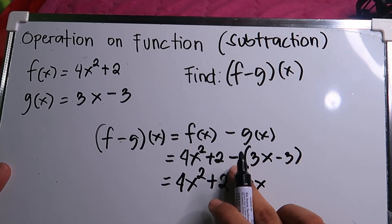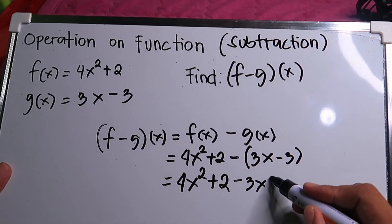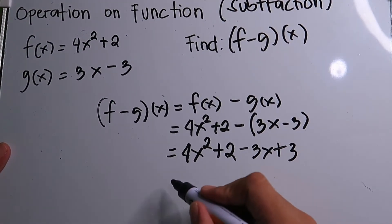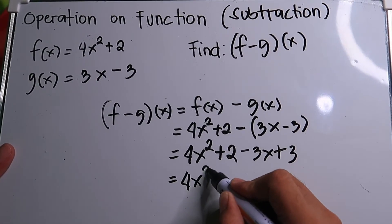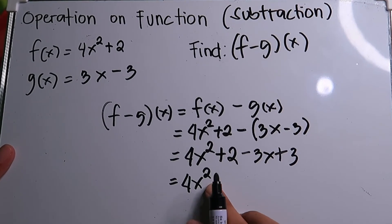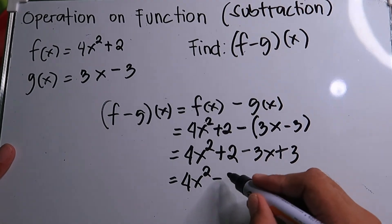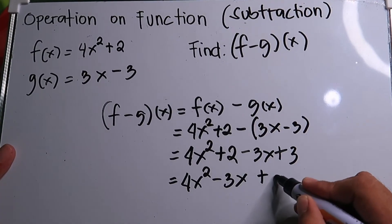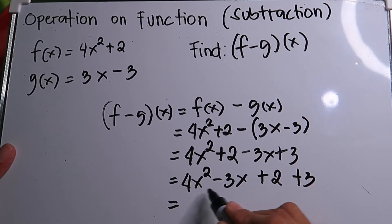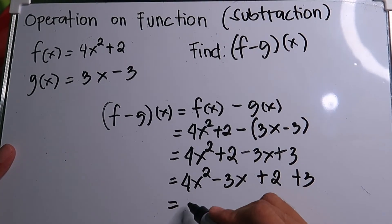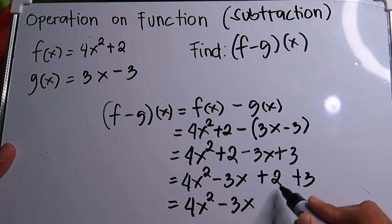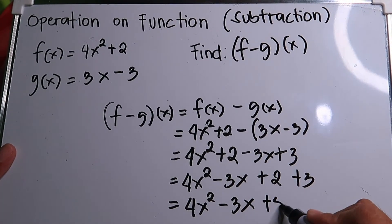Remove the parentheses by distributing the negative: negative times positive 3x gives negative 3x, and negative times negative 3 gives positive 3. Combine like terms — we cannot combine 4x squared and 3x since the variable has different exponents. Arrange the terms: 4x squared minus 3x, and then 2 plus 3 is 5. The final answer is 4x squared minus 3x plus 5.